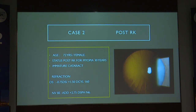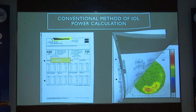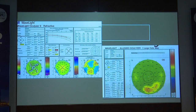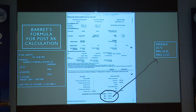The second case is an RK patient who has a plus 1.5. She was very happy and suddenly developed a cataract. We have to tell her about the problems post-RK because most of these patients have a hyperopic shift. Using the IOL Master and Lens Star, conventional calculation gave plus 17.5, but using the Pentacam and Barrett's formula the maximum was 21 — a significant difference between the calculations.